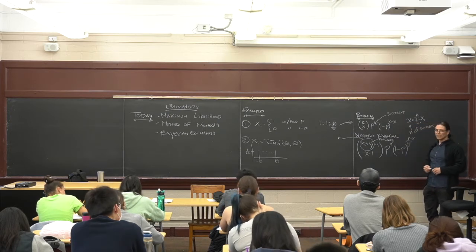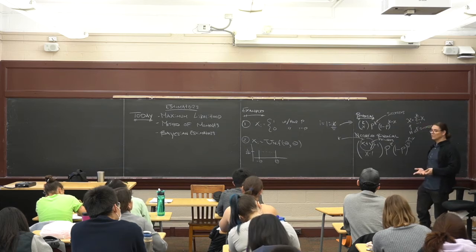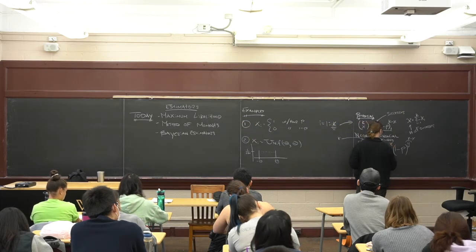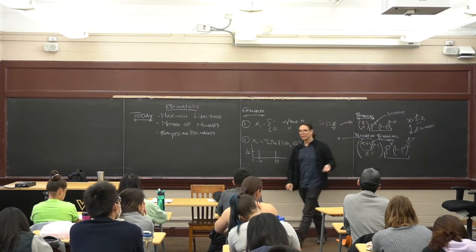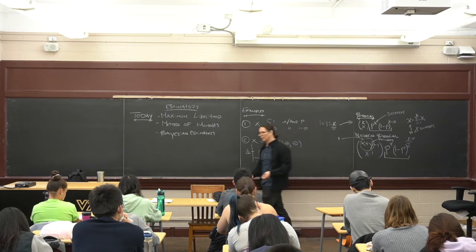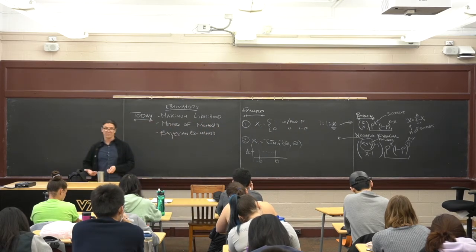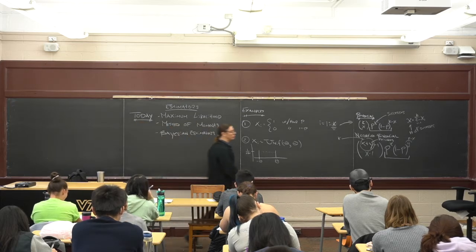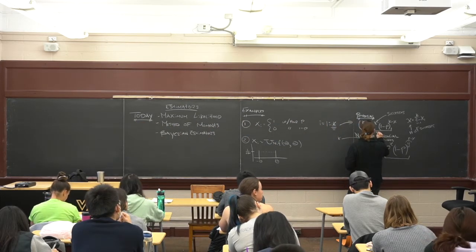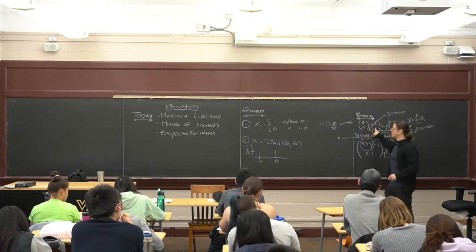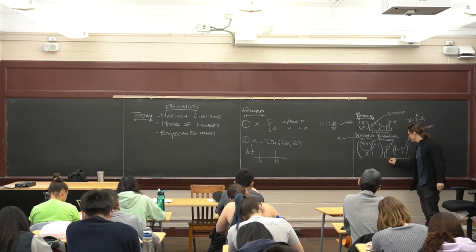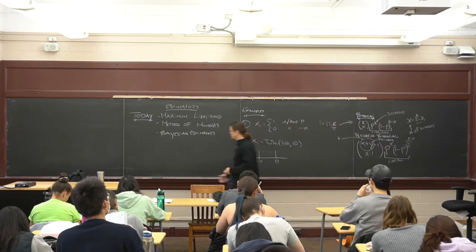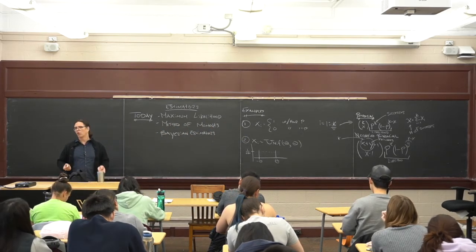These two models are very similar to each other — the difference is what's random. The key point is that the part of the distribution that depends on p is exactly the same. The normalizing constant is different. So we showed that if I computed p-values and did hypothesis testing using these two different underlying assumptions, I get different p-values. But the likelihood function is exactly the same as a function of p given the sample data.